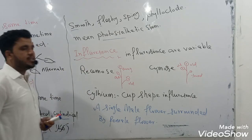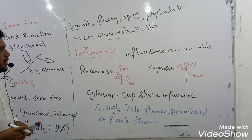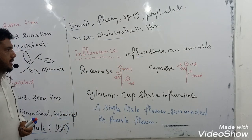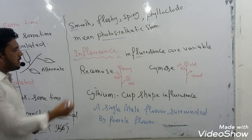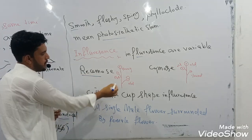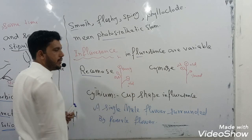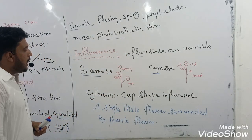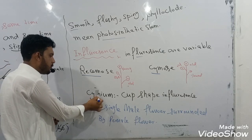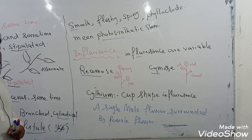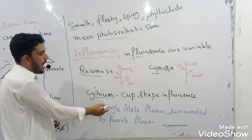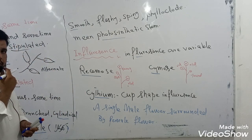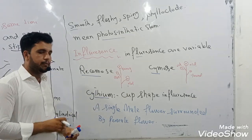Coming to the inflorescence: the inflorescence is the combined arrangement of flowers. The inflorescences are variable in this family. In some members they are racemose type, in which older flowers are at the bottom and younger ones at the top. A special type of inflorescence also found in this family is called cyathium — the cyathium is a cup-shaped inflorescence in which a single female flower is surrounded by male flowers, forming the appearance of a cup.